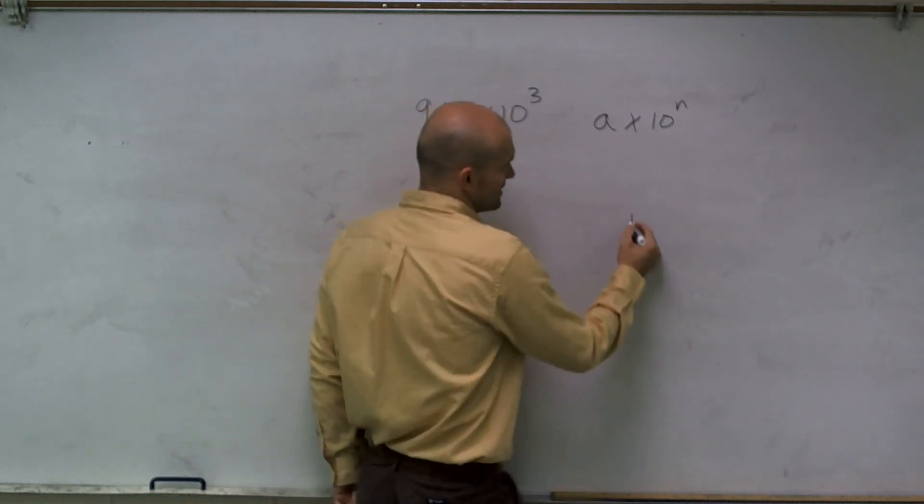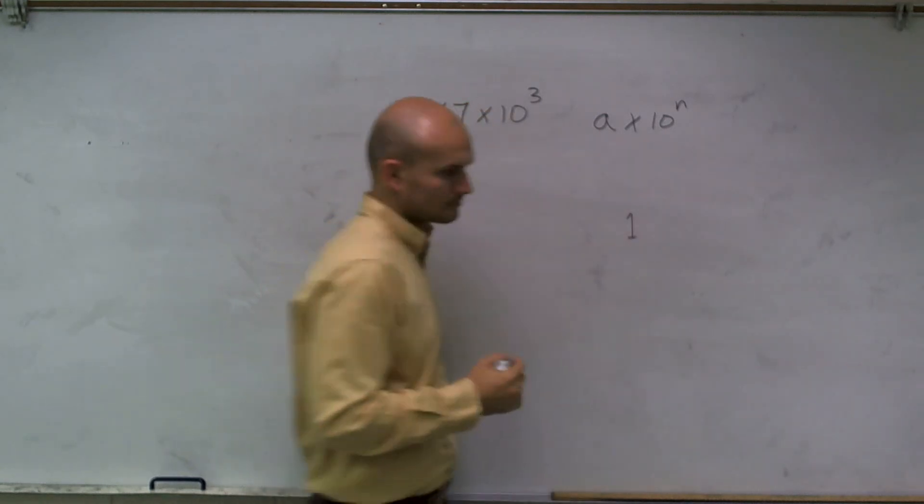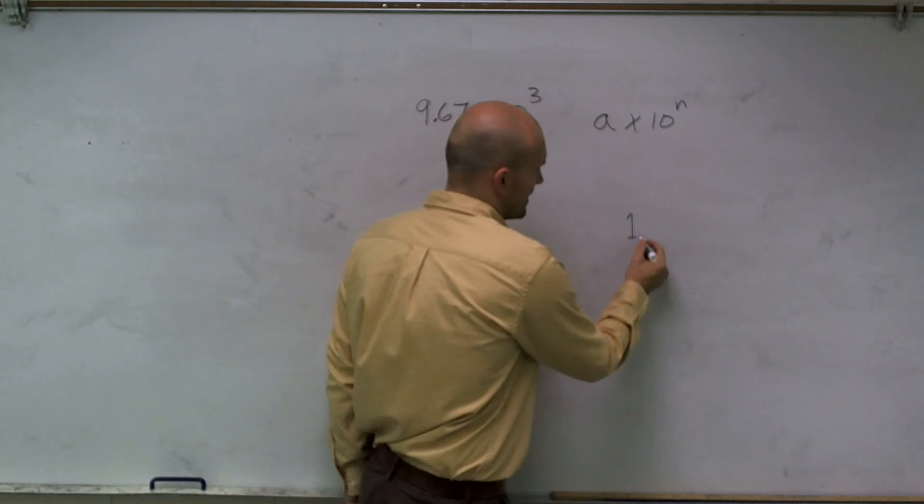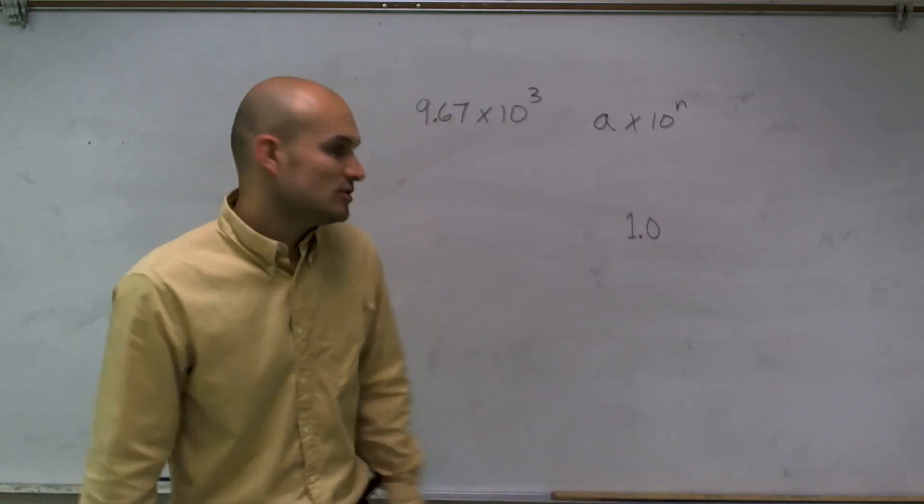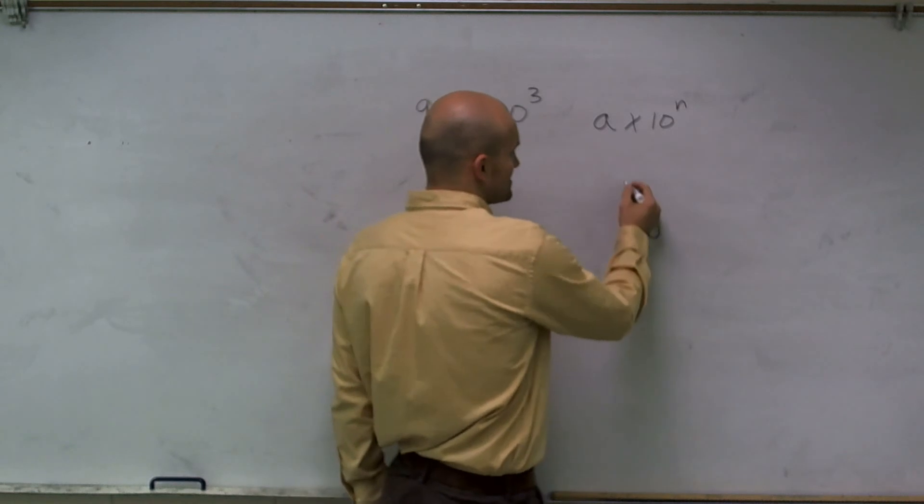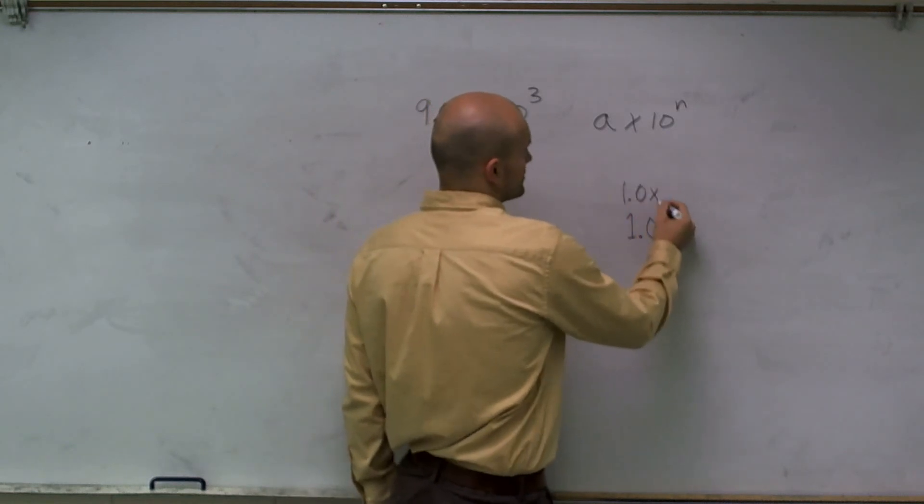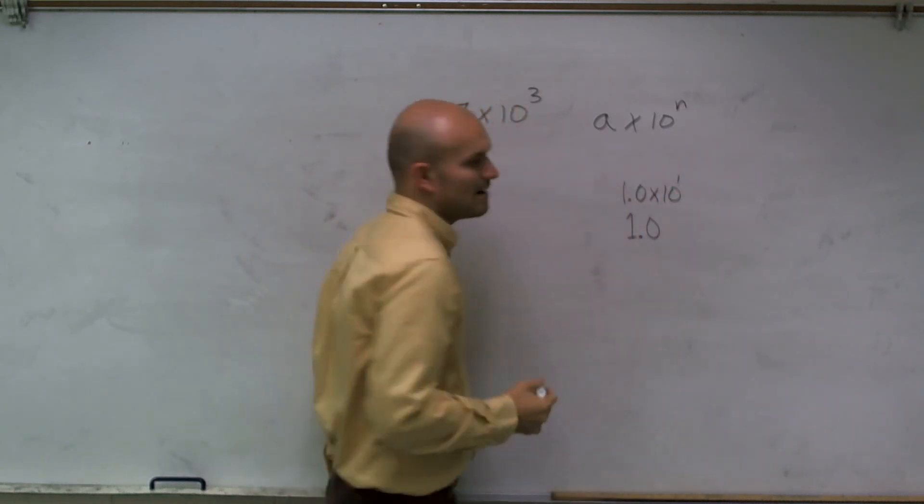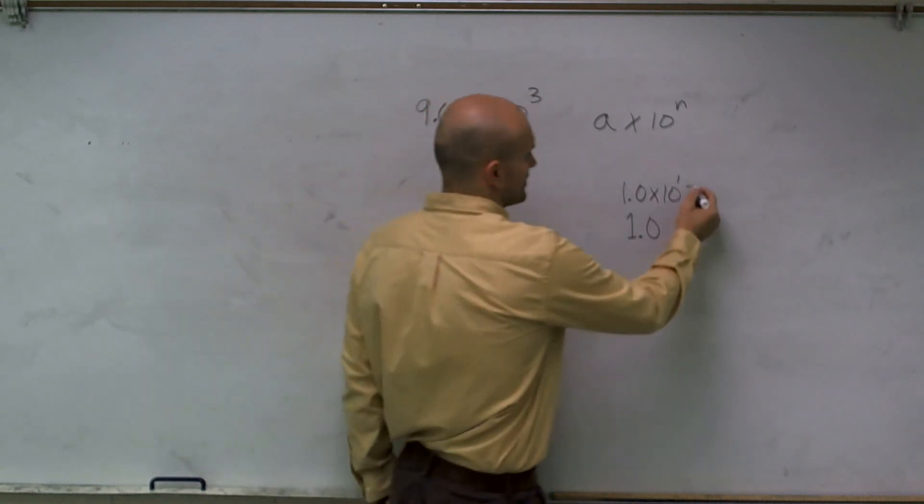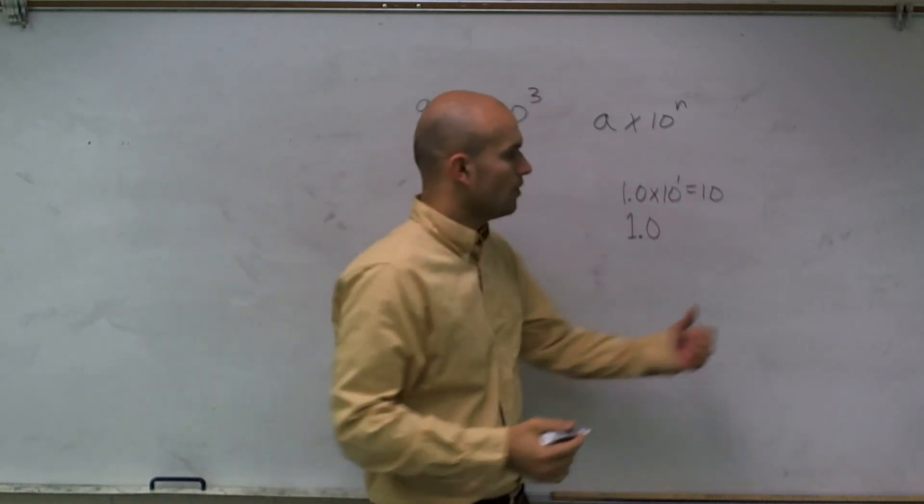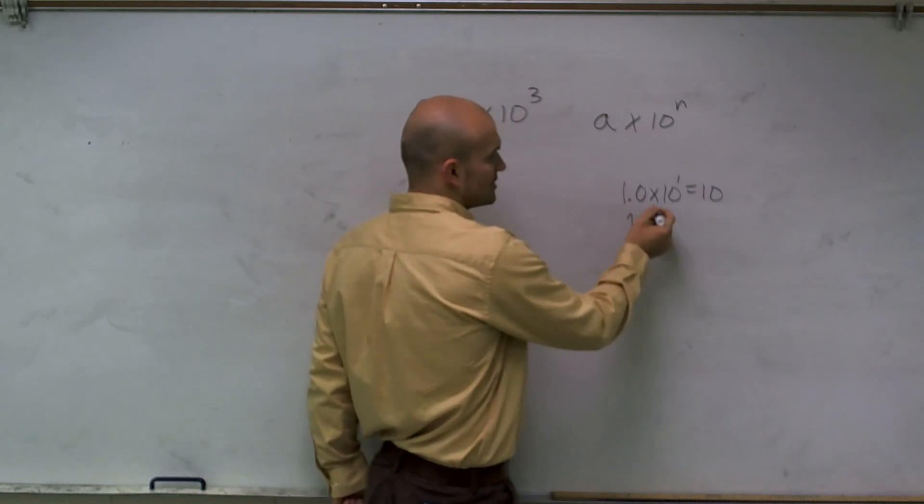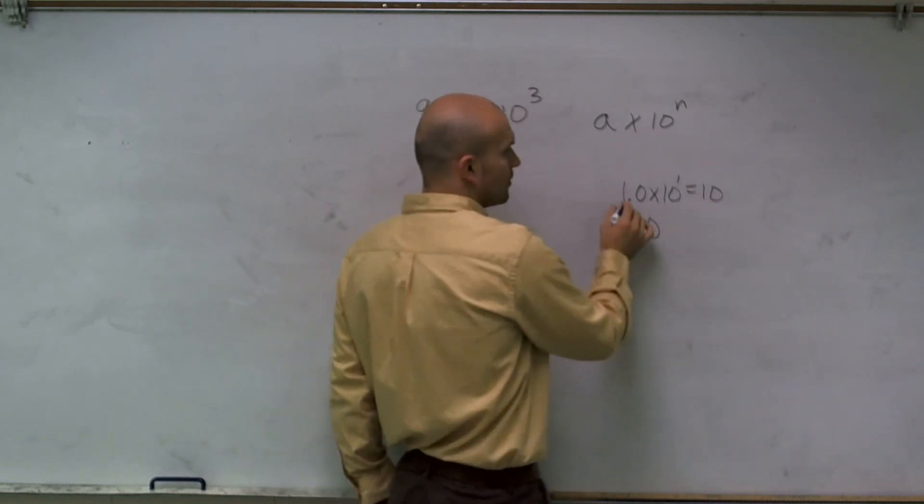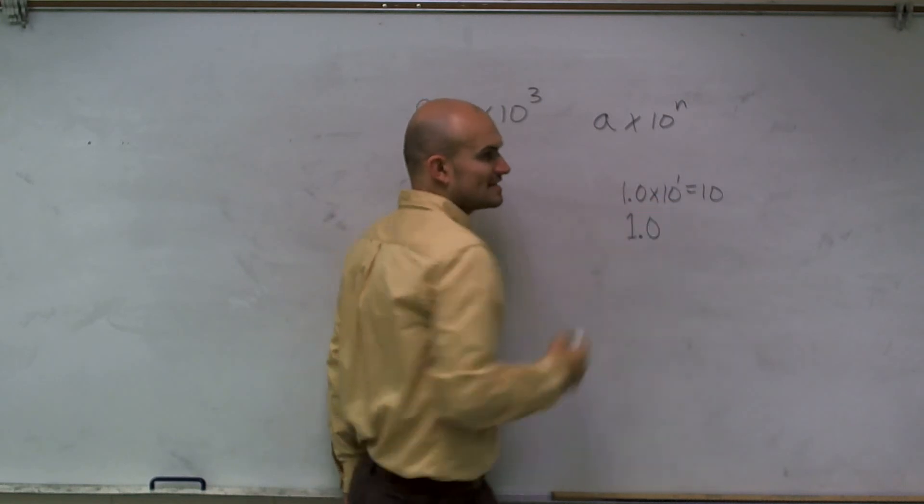So let's just take the number 1. And 1 we can write has a decimal point at 1.0. Now, if I was to multiply 1.0 times 10 to the first power, we know that answer would give us 10. Or what we'd also like to do is notice that really all I'm doing to 1.0 is just taking the 1.0 and moving it 1 decimal point to the right.